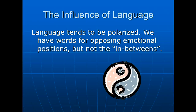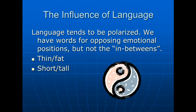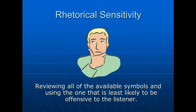The influence of language is that language tends to be polarized. We have words for opposing emotional positions but not for the in-betweens: thin and fat, short and tall, new and old, neat and sloppy. It's very hard to express something in between. We must therefore have rhetorical sensitivity — reviewing all available symbols and using the one least likely to be offensive to the listener.